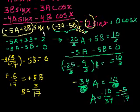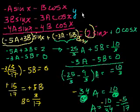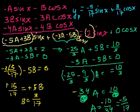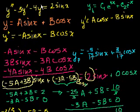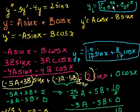We now have the particular solution: y_p equals minus 5/17 times sine of x plus 3/17 times cosine of x. The general solution to the non-homogeneous equation is the homogeneous solution c1·e to the 4x plus c2·e to the minus x, plus this particular solution found using undetermined coefficients. Add those together and you're done.